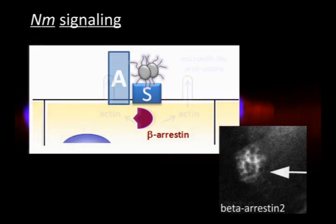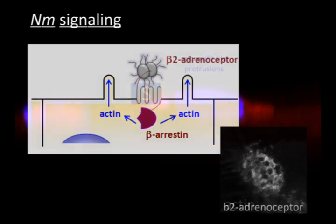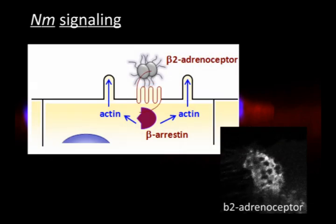We found that beta-arrestin is indeed recruited under the bacterial colony, and via docking and activation of SRC, induces the formation of actin-rich membrane protrusions. We were also able to show that the G protein-coupled receptor, the beta-2 adrenoreceptor, is the signalling receptor that recruits beta-arrestin to induce the signal transduction events elicited by meningococcus.